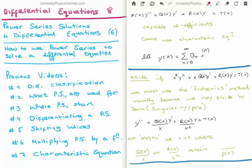There are seven videos previous to this which are all relevant in one way or another. Video 1 covered the classification of differential equations. Video 2 discussed what power series are used for, comparing them to Fourier series. Video 3 discussed where power series start. Video 4 differentiated power series. Video 5 shifted the indices. Video 6 multiplied by a function. And video 7 discussed the characteristic equation, which is what we use to solve a differential equation with constant coefficients.